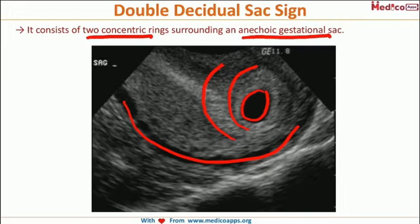The reason why we can see this double decidual sac is basically the growing embryo pushes the central cavity complex, and then what happens is the decidua capsularis and decidua parietalis — decidua capsularis forms the first ring and decidua parietalis forms the second ring. So these two rings are formed.